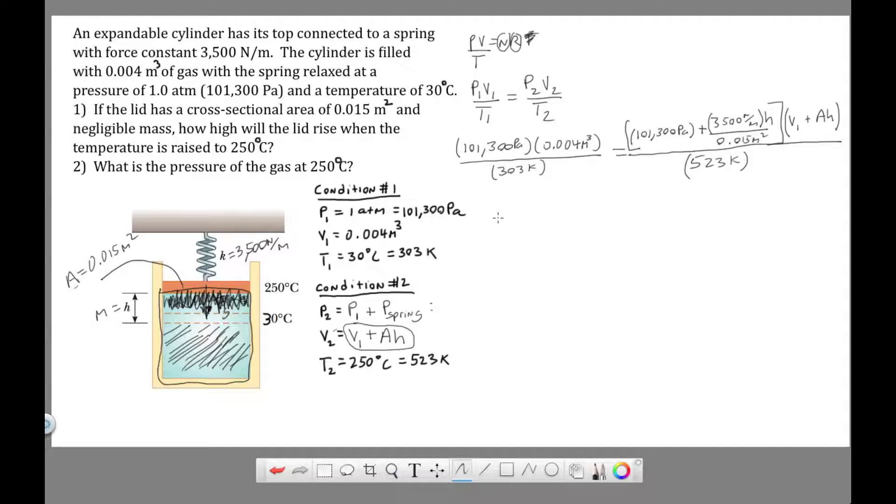Moving along. The algebra here simplifies down. What I'm going to do is I'm going to deal with this part. I'm going to simplify these four values. I'm going to multiply both sides by 523. And this comes out to be 699.41. That's these four values simplified. Equal to, so what this becomes is 101.3, plus 233,333.3H times 0.004 plus 0.015H.